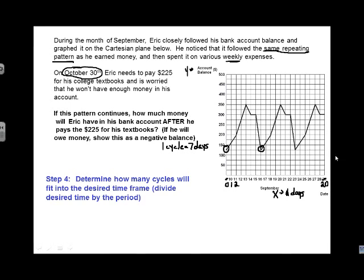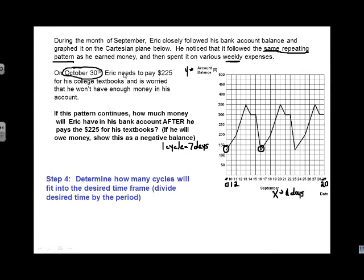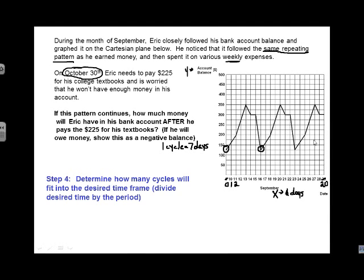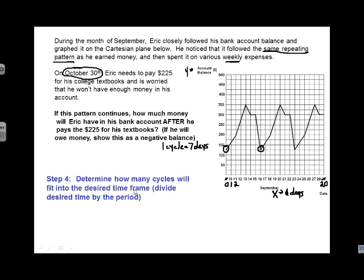Now, you could potentially continue the graph, but it's going to take a little while to continue the pattern. And so if we focus on some of the patterns that's involved, we can actually do it a lot quicker than trying to continue the graph. So we want to figure out how many cycles will fit into the desired timeframe. But first, I need to know, well, how many days in is October the 30th?